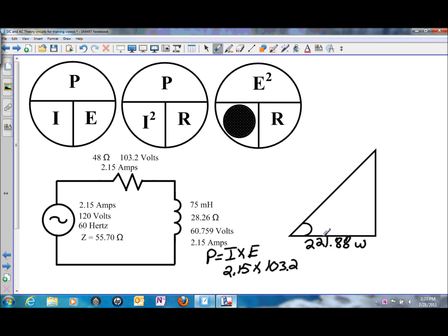So we can repeat that again, I times E, and we can solve for the reactive side or the VARs. Once again, ensuring that you are using the correct numbers: 2.15 amps of current flow times 60.759 volts of reactive voltage will give us 130.63 VARs.